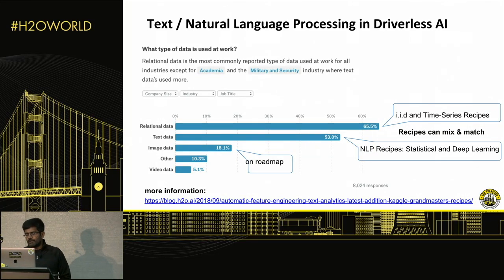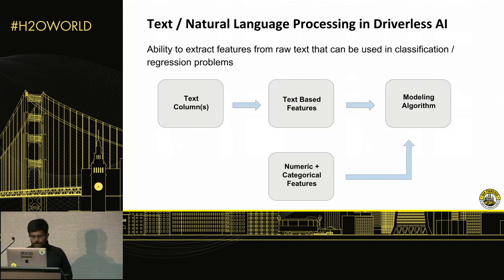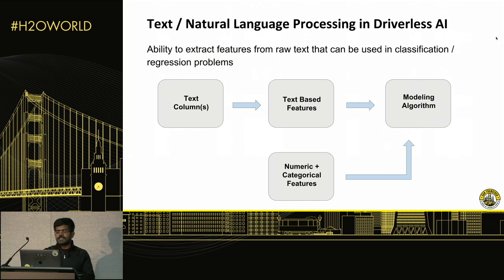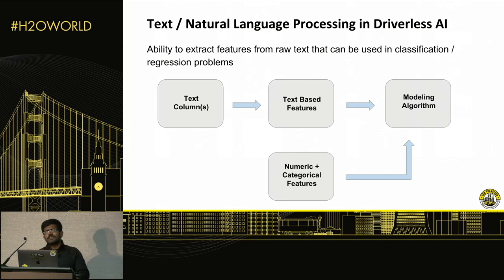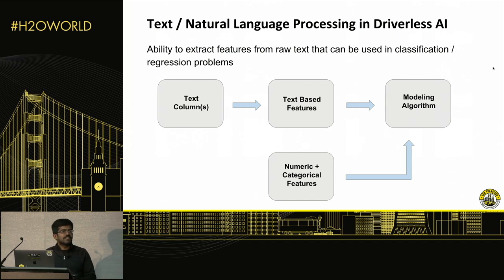In this session, I'll talk about the current NLP capabilities inside Driverless AI. If you want more information, we also have a blog post — the link is given at the bottom, so please feel free to read more about it. Along with structured data from which we extract many different types of features and build models, if we also have text features in our dataset, Driverless AI extracts several text-based features and uses all modeling algorithms present to build models — handling both numerical and text features together.